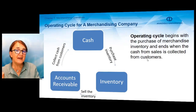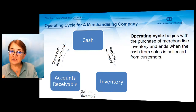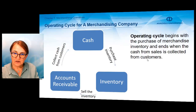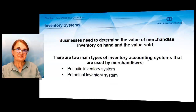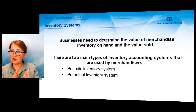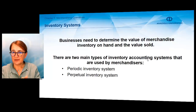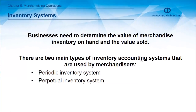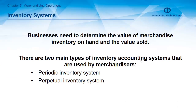This operating cycle is very important. To emphasize: the operating cycle begins with the purchase of merchandise inventory and ends when the cash from sales is collected from the customer. To record merchandise inventory-related transactions, we first must determine the value of merchandise inventory on hand and the value of sold inventory. There are two different methods: the periodic inventory system and the perpetual inventory system.